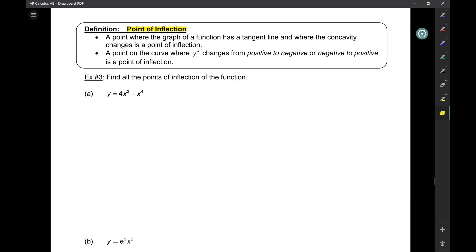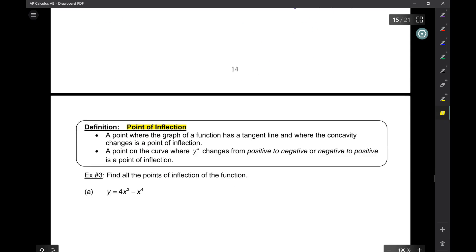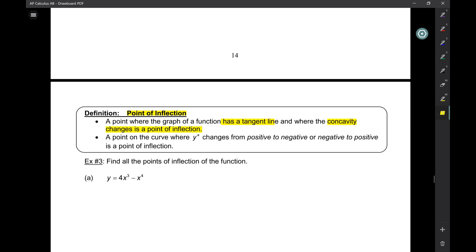Two conditions must be met in order for something to be a point of inflection. One is, it has to be where y double prime is 0. Okay, fine, that's an easy condition to meet, but a point of inflection is a point where the graph of a function has a tangent line, and more importantly, where the concavity changes from up and down and so on and so forth.